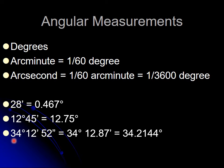For example, 34 degrees, 12 arc minutes, 52 arc seconds: 34 plus 12 divided by 60 plus 52 divided by 3600 gives you 34.2144 degrees. This is the way that you make angular measurements.